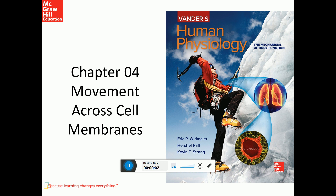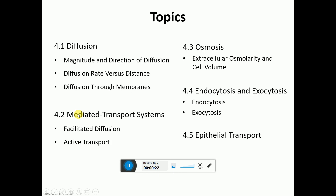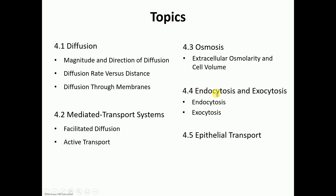In Chapter 4, we're going to be talking about movement across cell membranes. In Chapter 3, we discussed the structure of the cell membrane. Now we'll talk about how things move across that cell membrane, either into or out of the cell. The topics include diffusion, mediated transport systems, osmosis, endocytosis versus exocytosis, and epithelial transport.